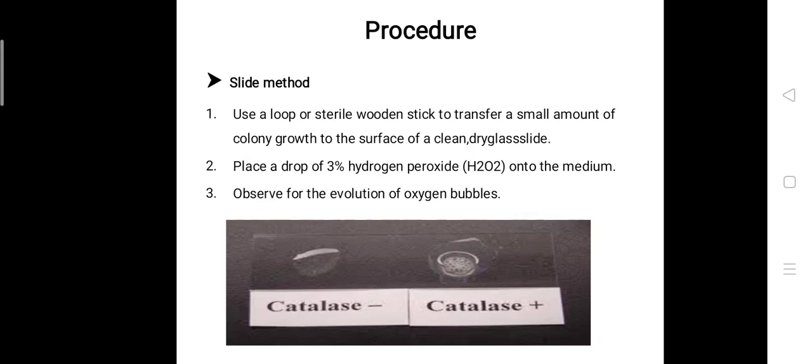In the slide method, the first thing you have to do is take a clean dry glass slide. With the help of a loop or sterile wooden stick, transfer a small amount of colony growth—this may depend on the size of the colonies—and place it on the surface of a clean dry glass slide.